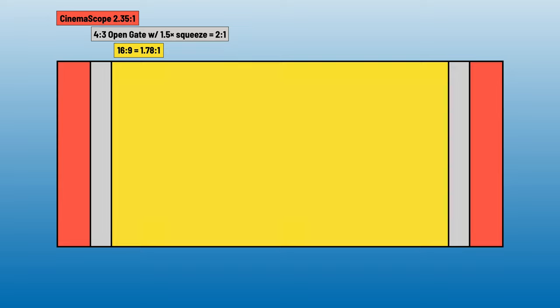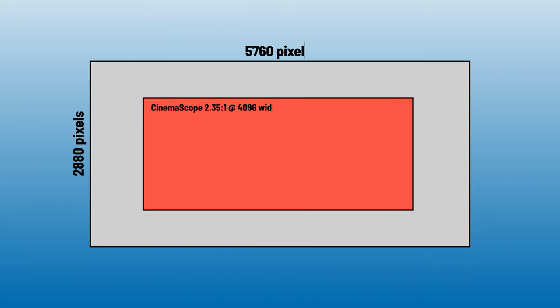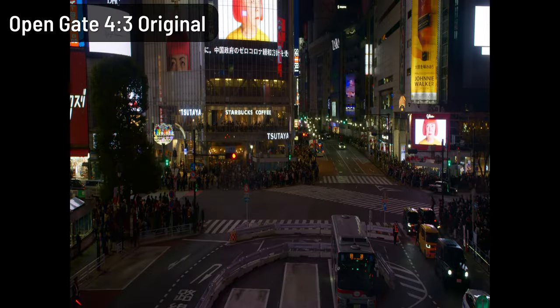However, you have way more pixels than you need and can punch in and reframe for even a full 4K delivery. Here are some samples of anamorphic shot in 4:3 OpenGate.